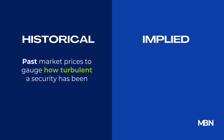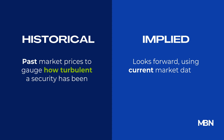Implied volatility, on the other hand, looks forward, using current market data to predict future fluctuations. Both types help investors anticipate risks and opportunities.